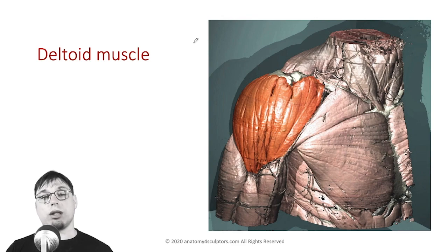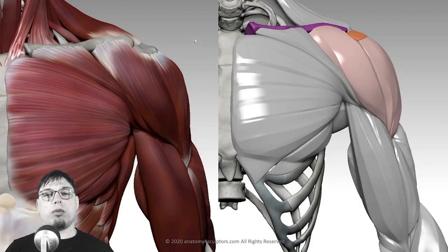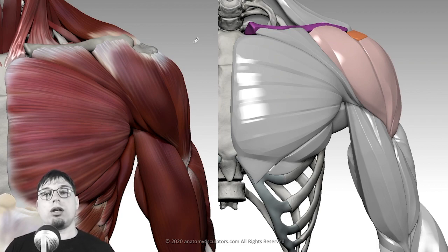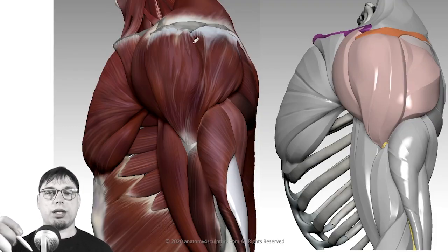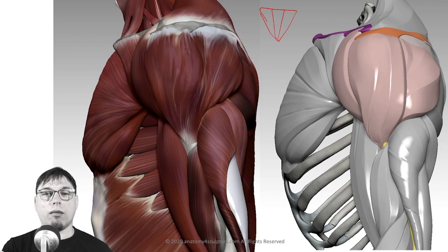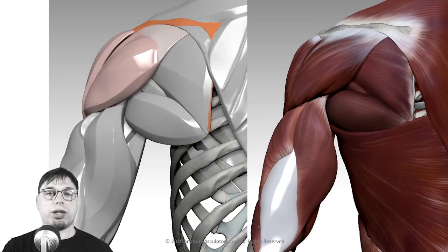The largest and main muscle of the shoulder is the deltoid muscle. The deltoid occupies basically the whole shoulder — you can call it the shoulder muscle. If you unwrap it, it creates the shape of a triangle, resembling the Greek letter delta, which is why the name 'deltoid' is used.